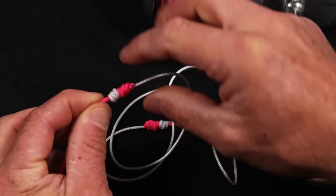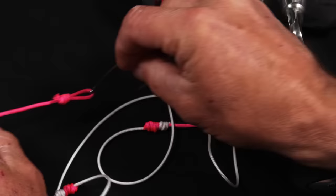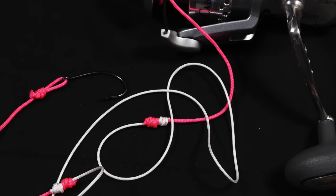And lastly, a Uni knot to the hook. One knot is the only knot you need for 95% of all fishing situations in the world. Teach that knot to a kid and he will be ready to go fishing.